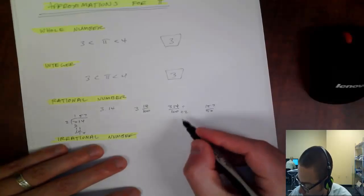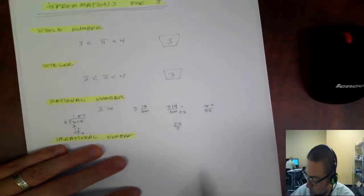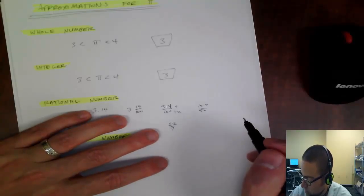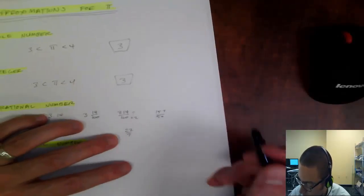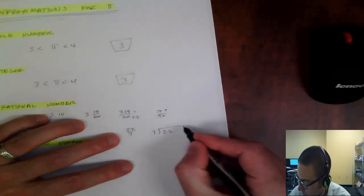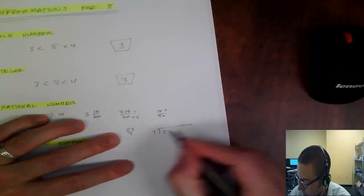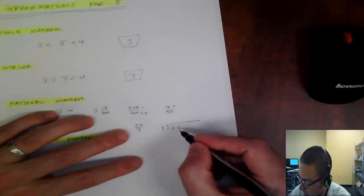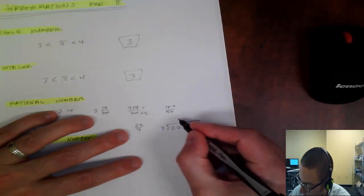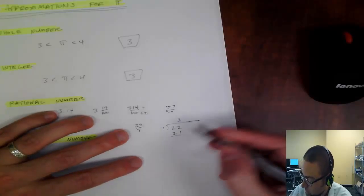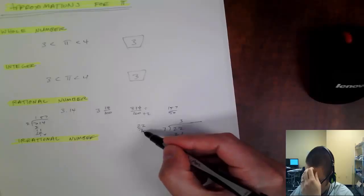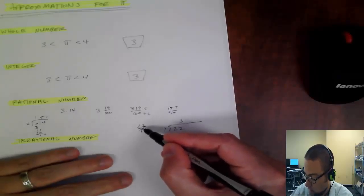Archimedes used 22 sevenths, let me just show you that that is approximately pi. So 7 goes into 22, 3 times, which is 21, and there's maybe one way you can think about is, what's a number that's 3 times as big, and a little bit more. Right. So 3 times 7 is 21, subtract to get a 1.